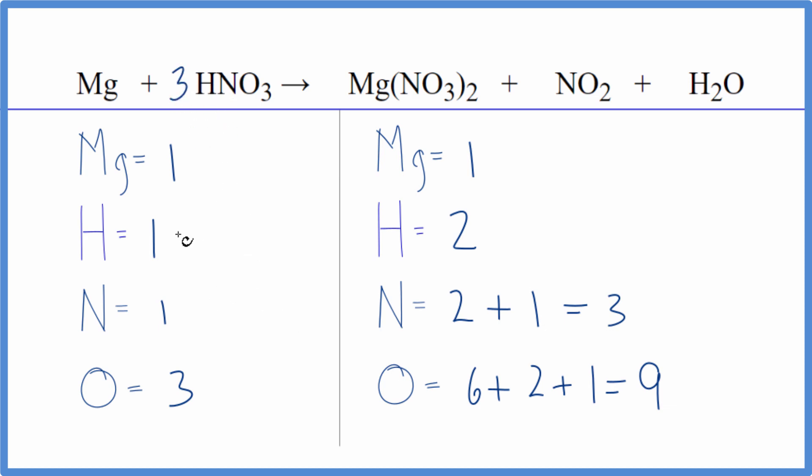That would give us one times three for the hydrogen, three of those, one times three for the nitrogen. So the nitrogens are balanced, and then three times three for the oxygen. Now we have nine oxygens, and it's looking pretty good, except the hydrogen isn't balanced. So we have to resolve that.